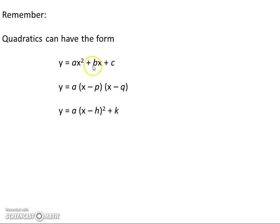There's y equals ax squared plus bx plus c which is your standard form. Y equals a(x minus p)(x minus q) which is your factorized form, and y equals a(x minus h) squared plus k which is the completing the square form.